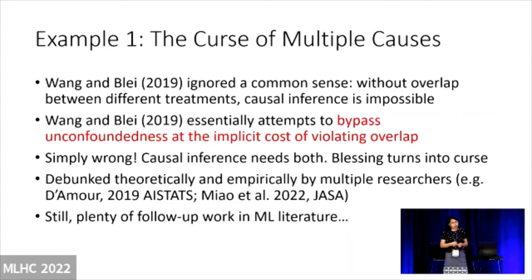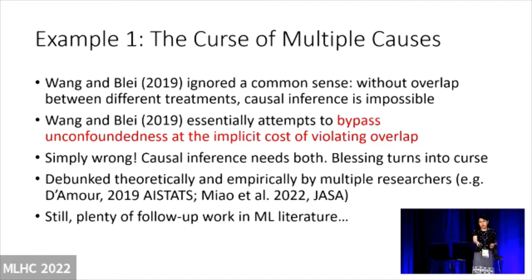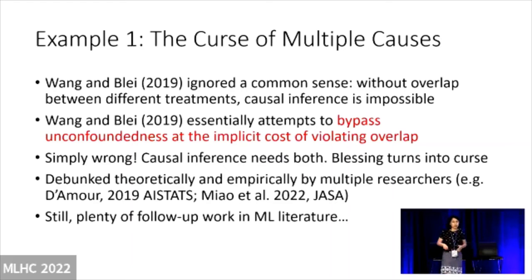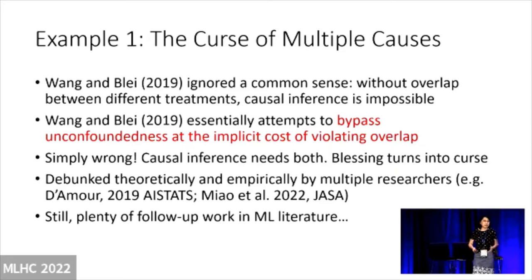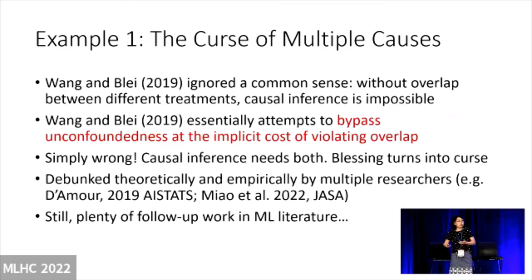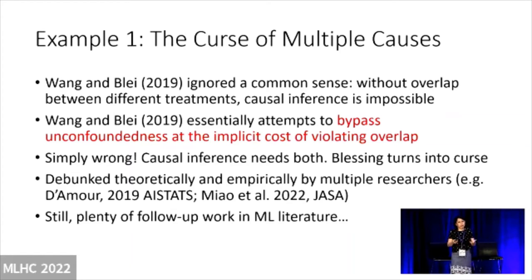It turned out I'm not alone. This paper has been pretty comprehensively debunked, theoretically and empirically, by multiple researchers in causal inference — including work at AI Stats 2019 and a recent JASA paper. If you're from the causal inference field, you know this paper is debunked. However, to my dismay, I still see plenty of follow-up work based on this paper in the machine learning literature. I was asking myself: what's going on? If you have any common sense in causal inference, you probably would not do work based on a debunked paper.